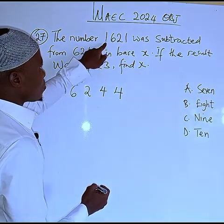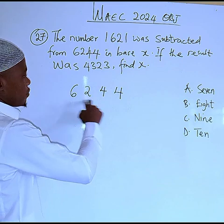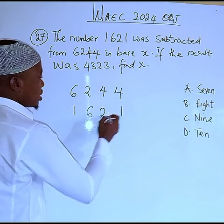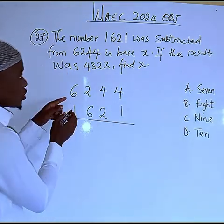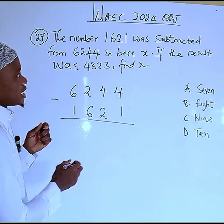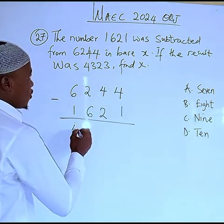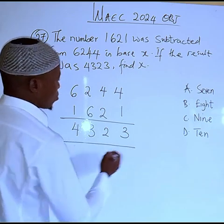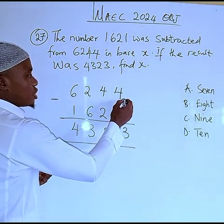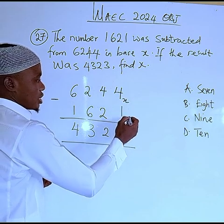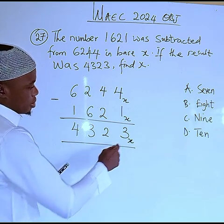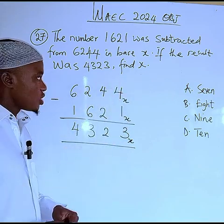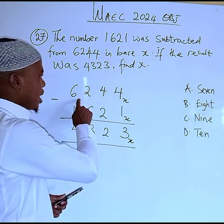Once 1621 is subtracted from 6244, the result should give us 4323. We put a minus sign. The result is 4323. We don't know the base — this will be in base x — and that is what we are asked to find: what is x?